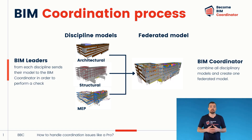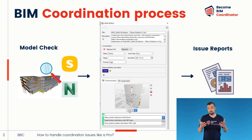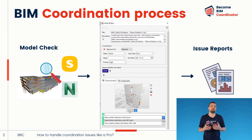The BIM coordinator receives all the models and combines them into one federated model. This model is then used to perform a model check. As agreed in a project's BIM execution plan, the BIM coordinator runs clash detection at various stages of the project.